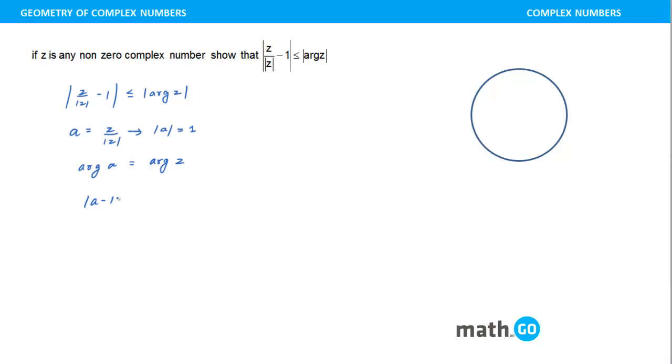So in a way, you want to prove something now, that this is less than or equal to argument a, where now we know that a lies on, I can say a lies on unit circle. Can I say this? That a lies on unit circle. So let's come back here now.